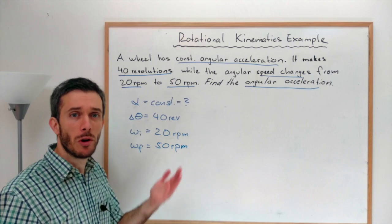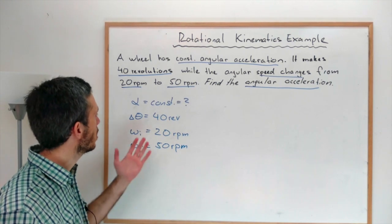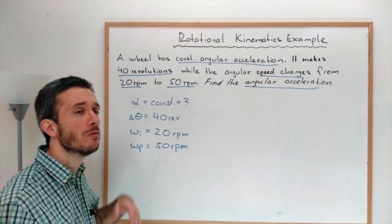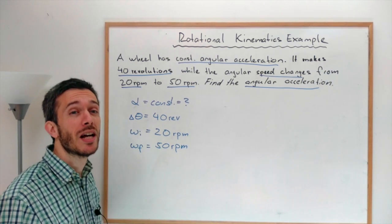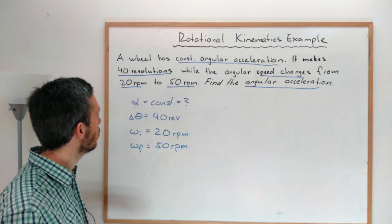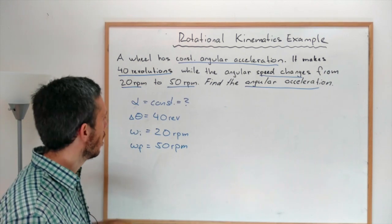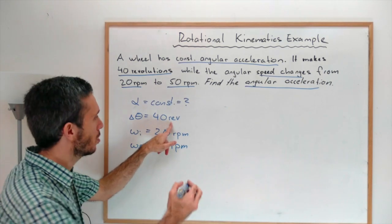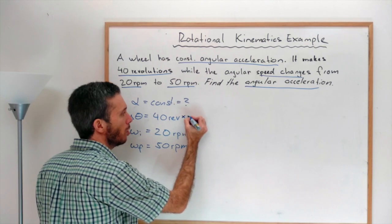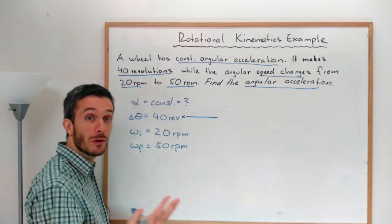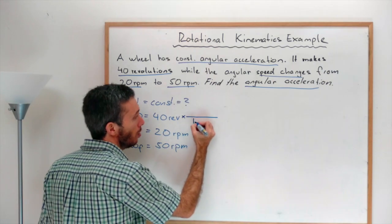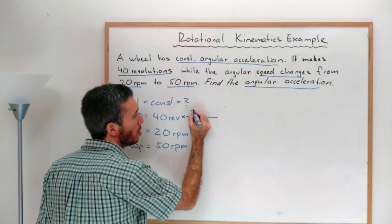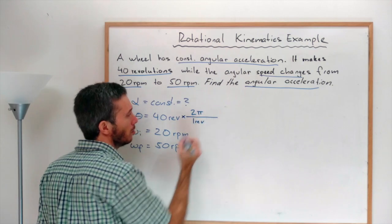Now the first thing that you want to do when solving this type of problem is convert all the units to SI standard units. Sometimes it works when not working in SI, but if you don't want to take any risk, convert it to standard. A revolution is a full circle. So if we convert to radians, which would be the standard SI unit for this type of problem, we know that one revolution is 2 pi.